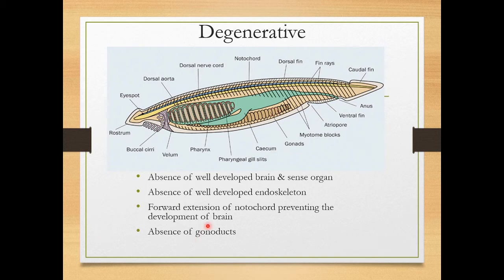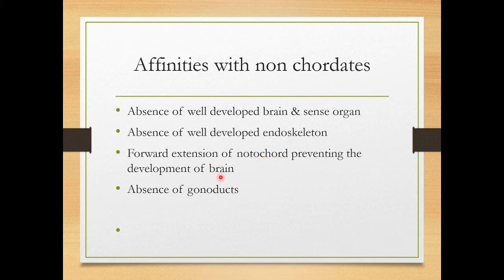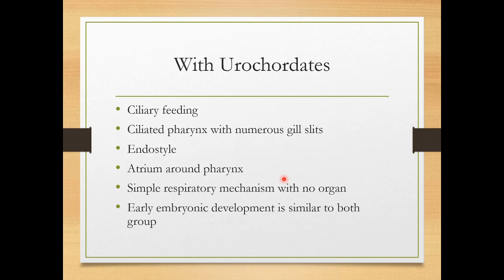Regarding affinities with non-chordates: Amphioxus shares certain characters with non-chordates. Most non-chordates have no brain and sense organs, no endoskeleton — instead they have exoskeletons. The extension of the notochord prevents brain development. Absence of gonoducts is also common in non-chordates. These shared characters — absence of well-developed brain, endoskeleton, and gonoducts — explain the affinity with non-chordates.